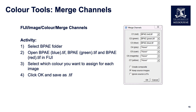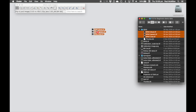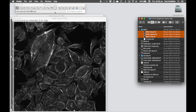We're going to take individual channels and merge them into an RGB image. In this case we're going to open up the BPAe folder and highlight all three BPAe blue, green and TIFF images to use in this activity. We can drag and drop these all at the same time.